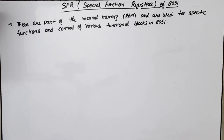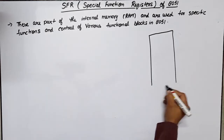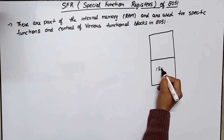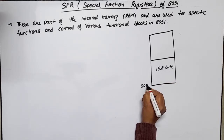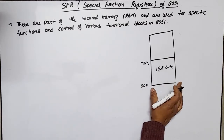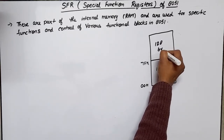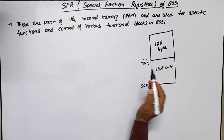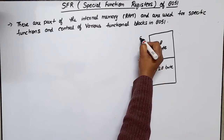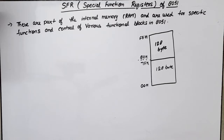In this video lecture on microcontroller 8051, I'm going to discuss the SFR — Special Function Registers. As the name suggests, these are special function registers that perform specific functions. In the 8051, internal memory has two parts: the lower 128 bytes range 00h to 7Fh, used for register bank, stack, bit addressable, and scratch pad. The upper 128 bytes are the Special Function Registers with address range 80h to FFh.